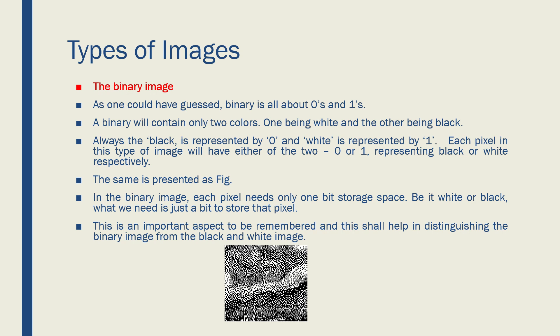Binary has got only two values — zero and one. Zero is black, one is white. It can be either of the two but not both. They need one bit of storage space. That is it. This is the binary image.